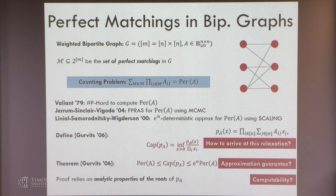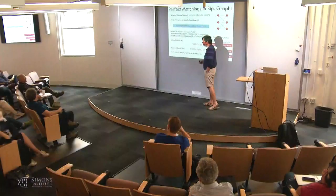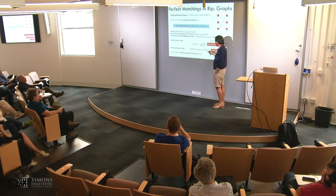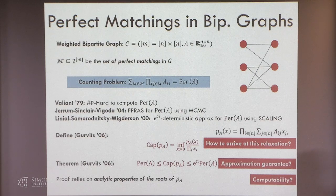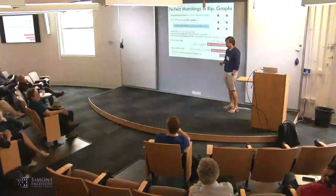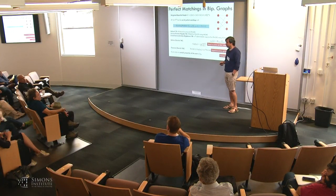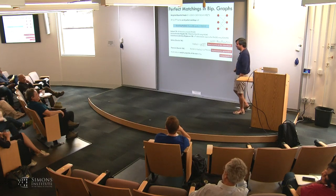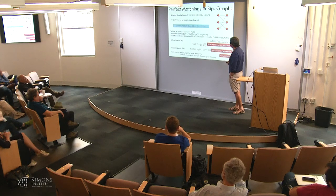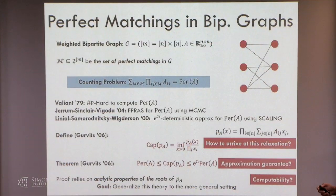Any questions so far? What would be deterministic versus randomized in computing capacity? These will be algorithms in the realm of convex optimization — things like the ellipsoid method or interior point method. In practice, if you want to make it faster, other approaches are fine too. Our goal is to generalize this theory to the setting of polynomials and polytopes.